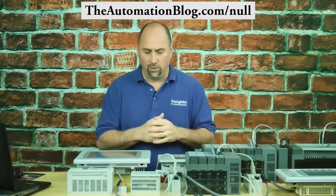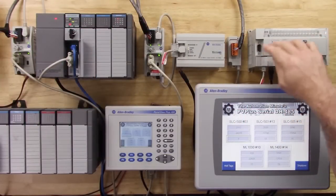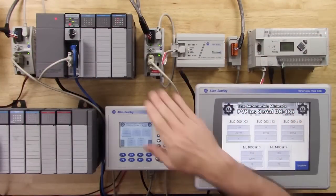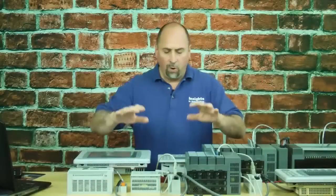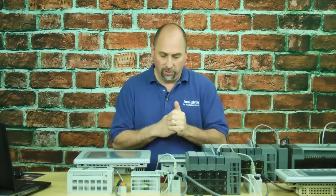So whether it's the 1400 here, if it was going to a computer serially, or the 505, whatever PLC you have in Rockwell Automation, you're going to need that no-modem cable to make a serial connection.